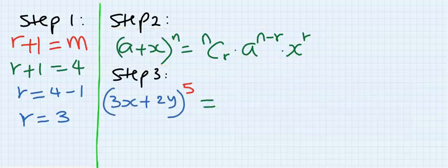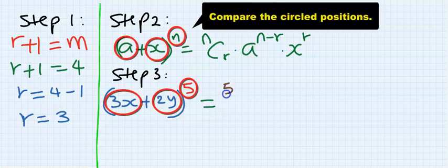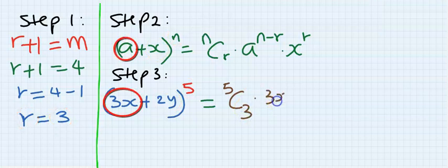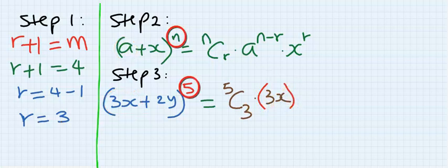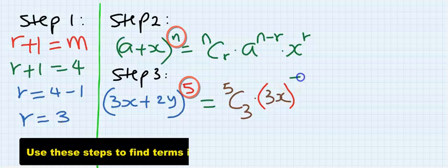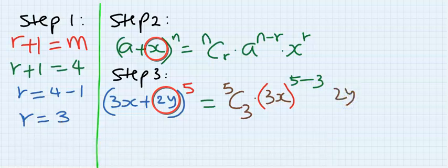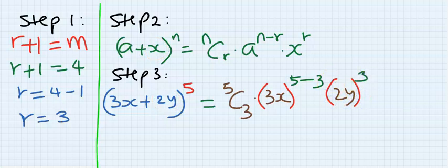Step three: rewrite the given question to look like the general formula. We have 5-combination-3; here a is 3x, n is 5, r is 3, x is 2y, and the top r is 3.